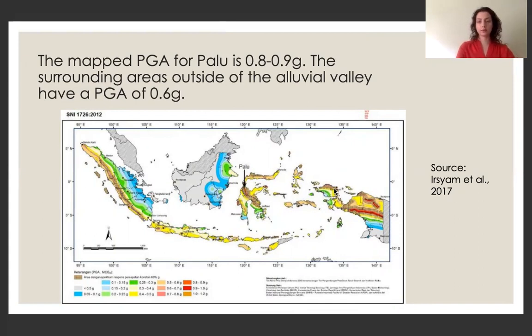So interestingly, in 2017, a few maps were published, which were to provide an update to the 2012 Indonesian seismic code. So here is one of the maps, which is the mapped PGA for Indonesia or predicted PGA. And if we look at Palu, we can see that the mapped PGA is around 0.8 to 0.9 G, which is a high value. And in the surrounding areas of the Alluvial Valley, it's lower about 0.6 G.